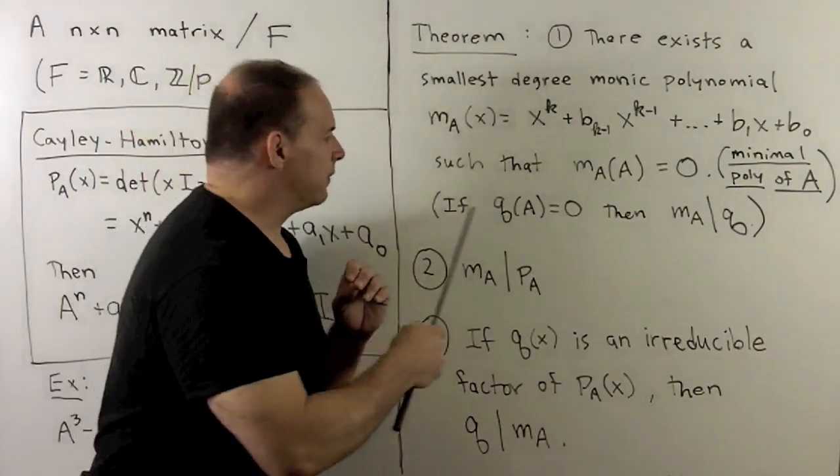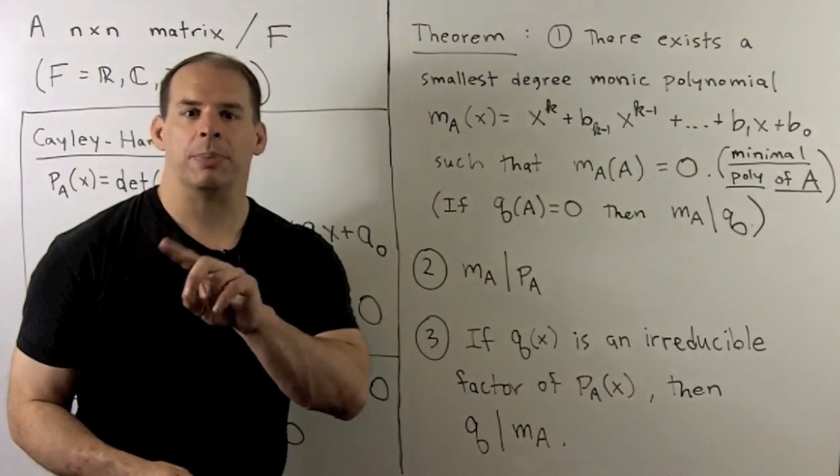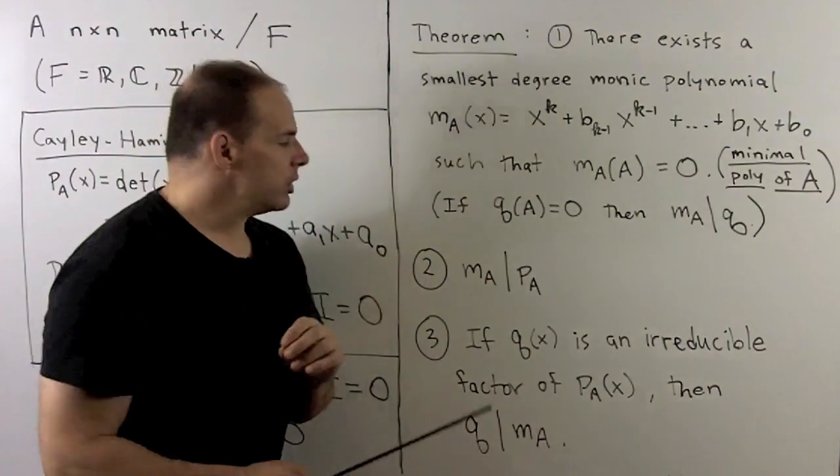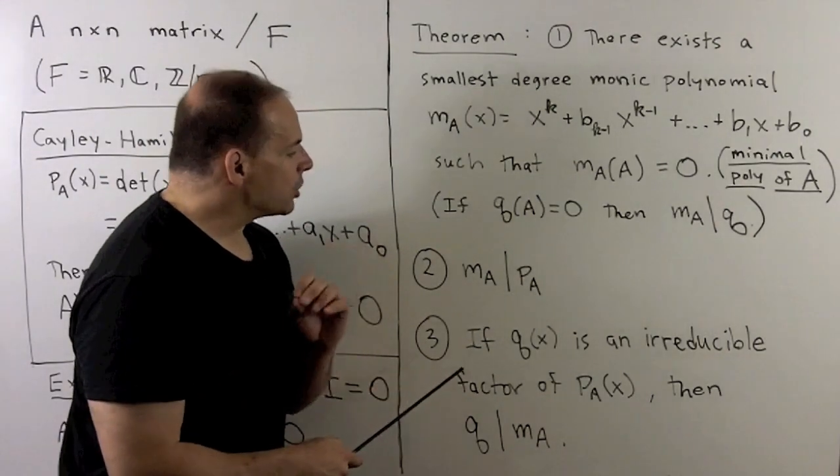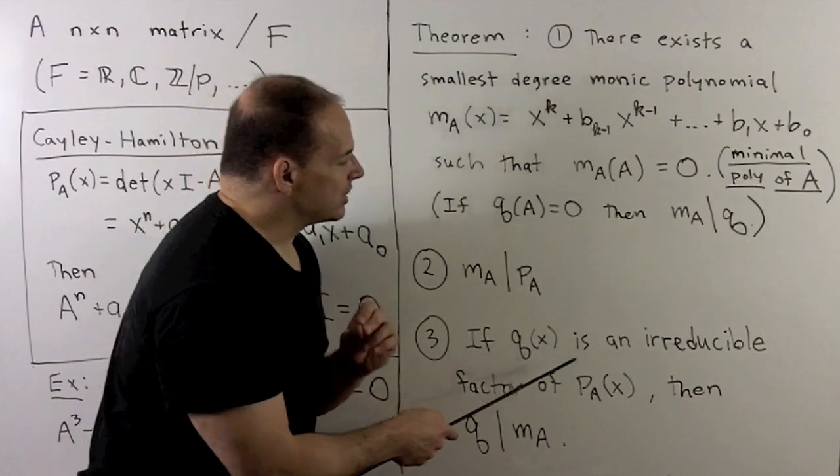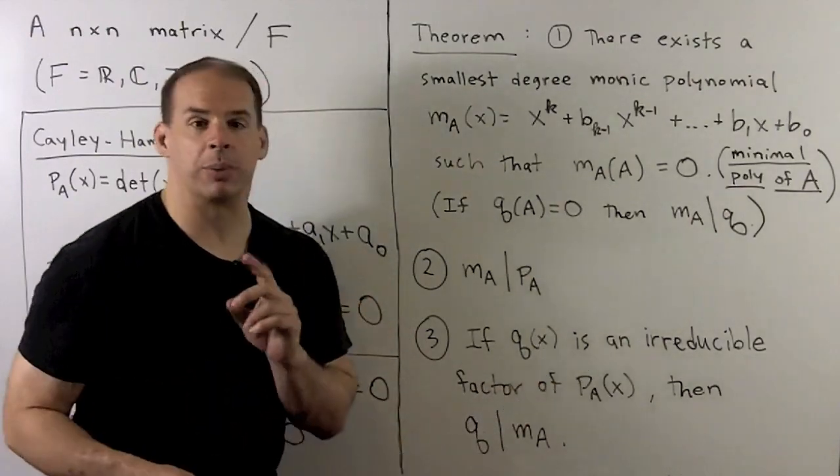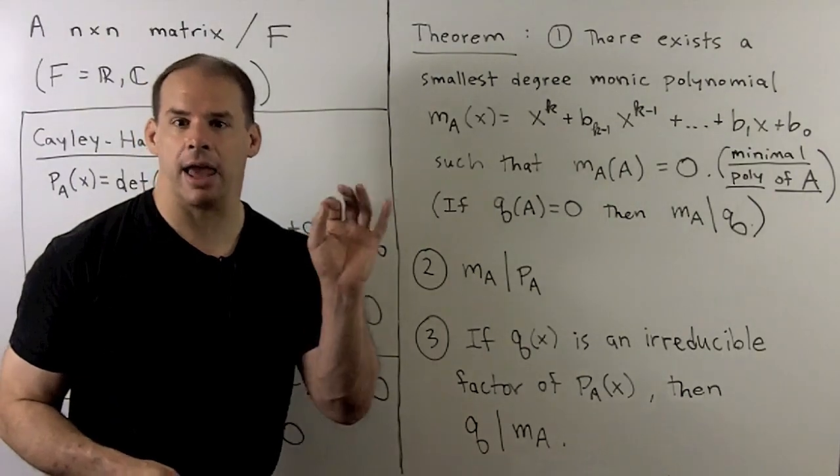Now, one special case of this, we know that the characteristic polynomial, when applied to A, gives us zero. So we'll have that M_A divides P_A. And we also have, if we have a polynomial Q_x, which is an irreducible factor of the characteristic polynomial of A, then Q_x must divide M_A.